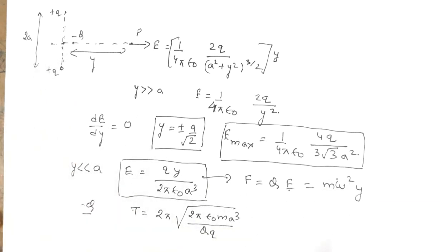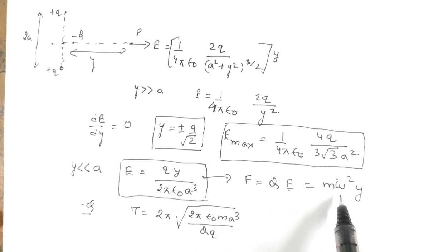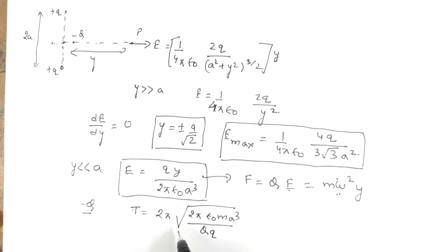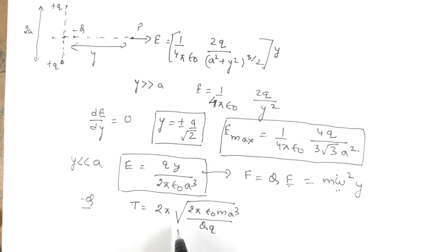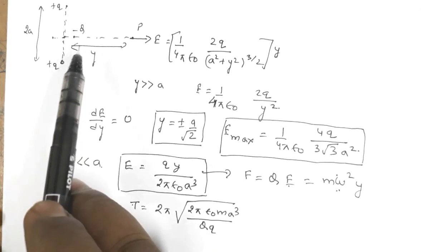From this you get the value of ω, and from ω you can get the value of the time period. So this is the expression for the period of oscillation of this negative charge.